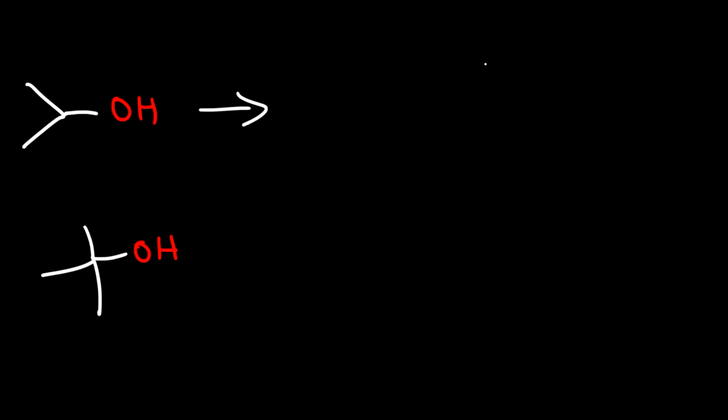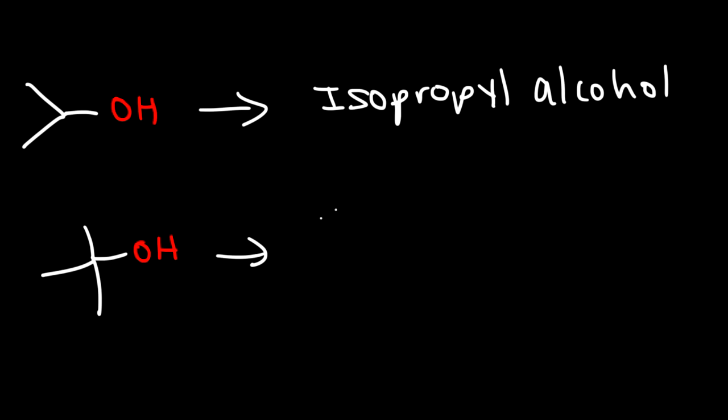Now what about these two examples? What's the common name for this alcohol? This is known as isopropyl alcohol — it has an isopropyl group attached to the OH group. And this is called tert-butyl alcohol.